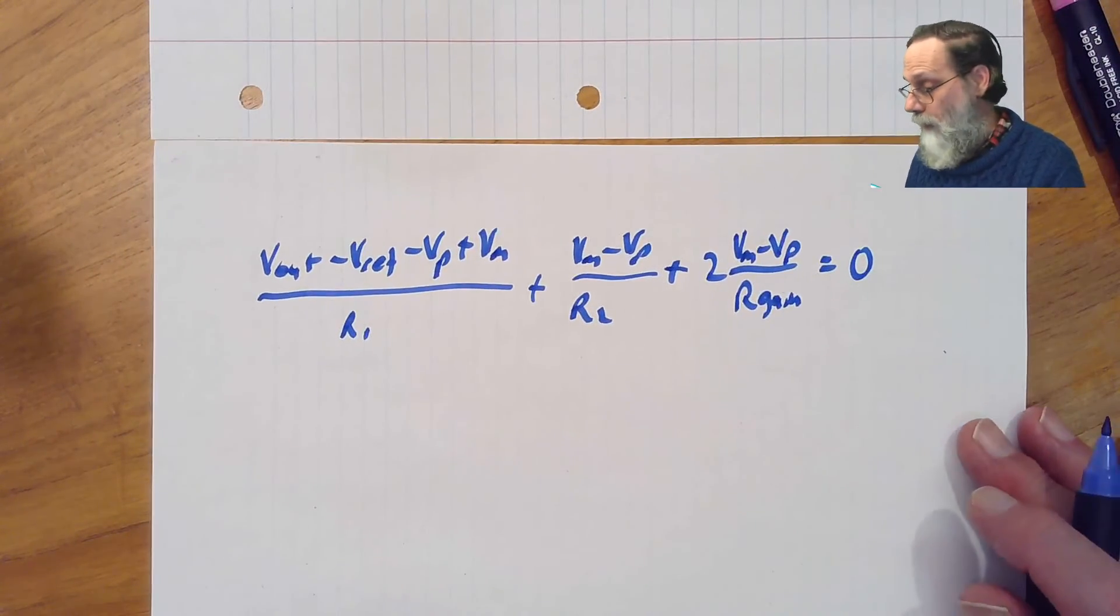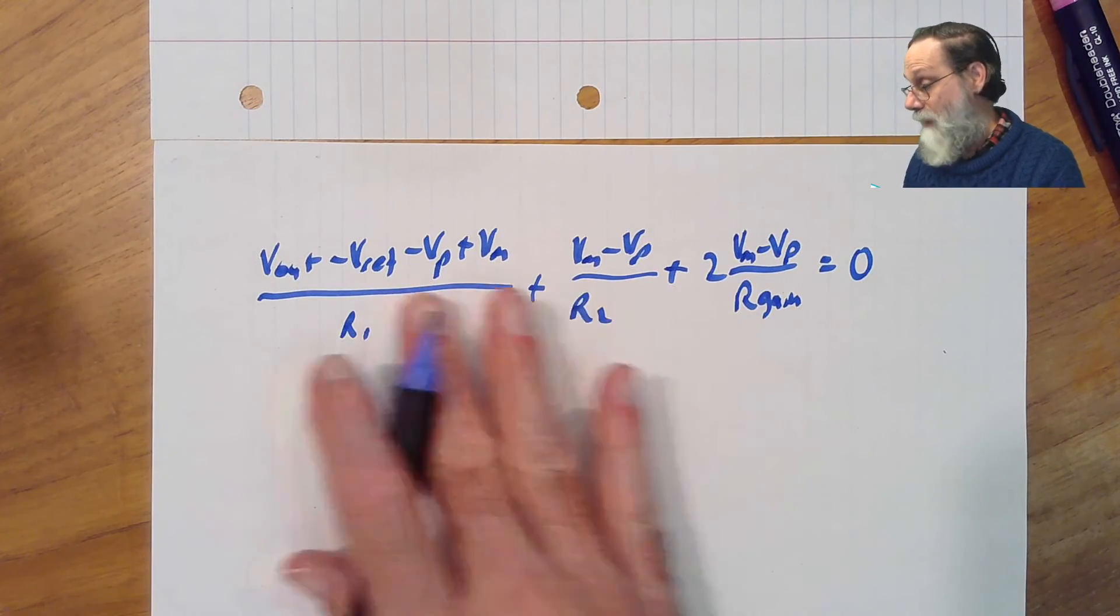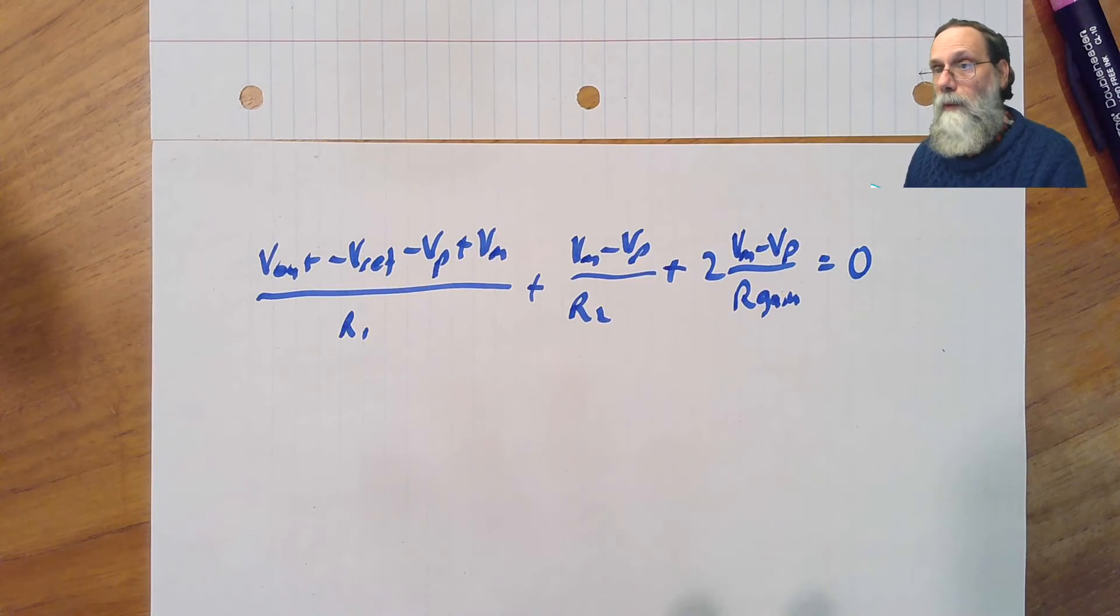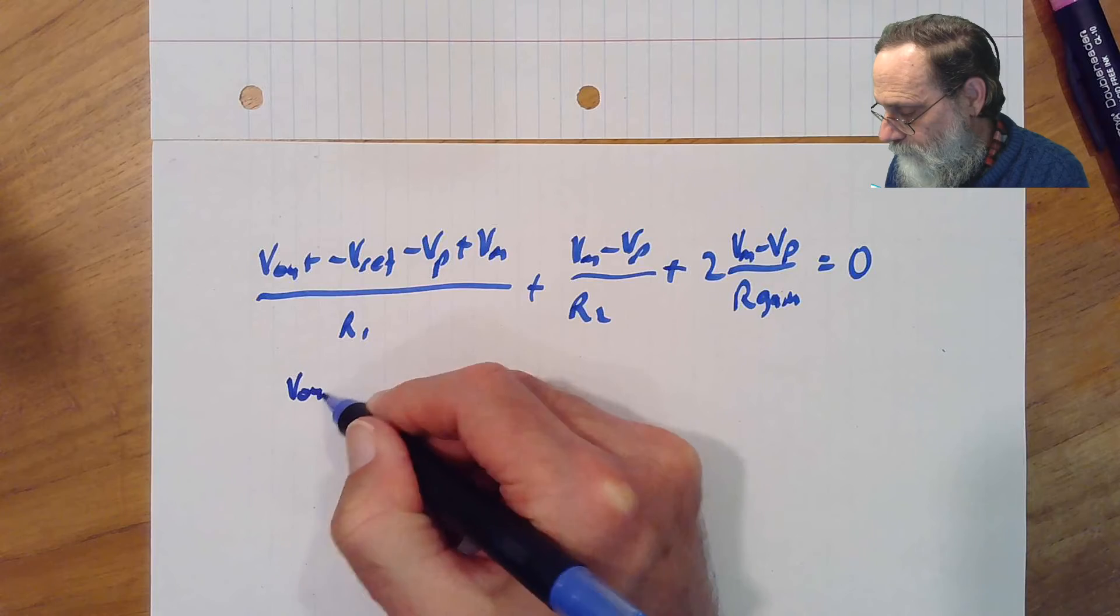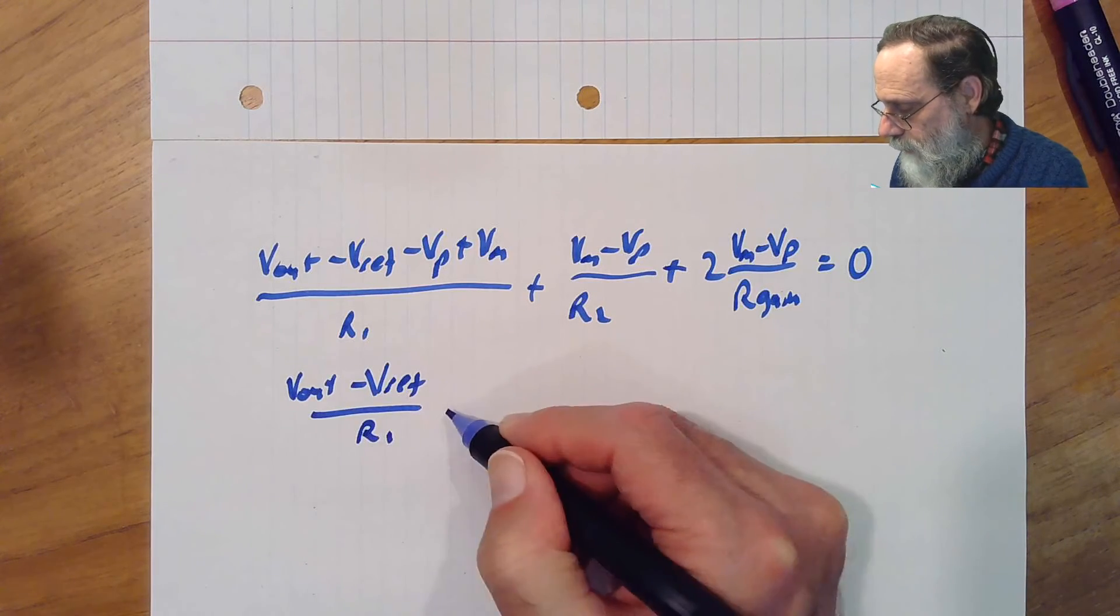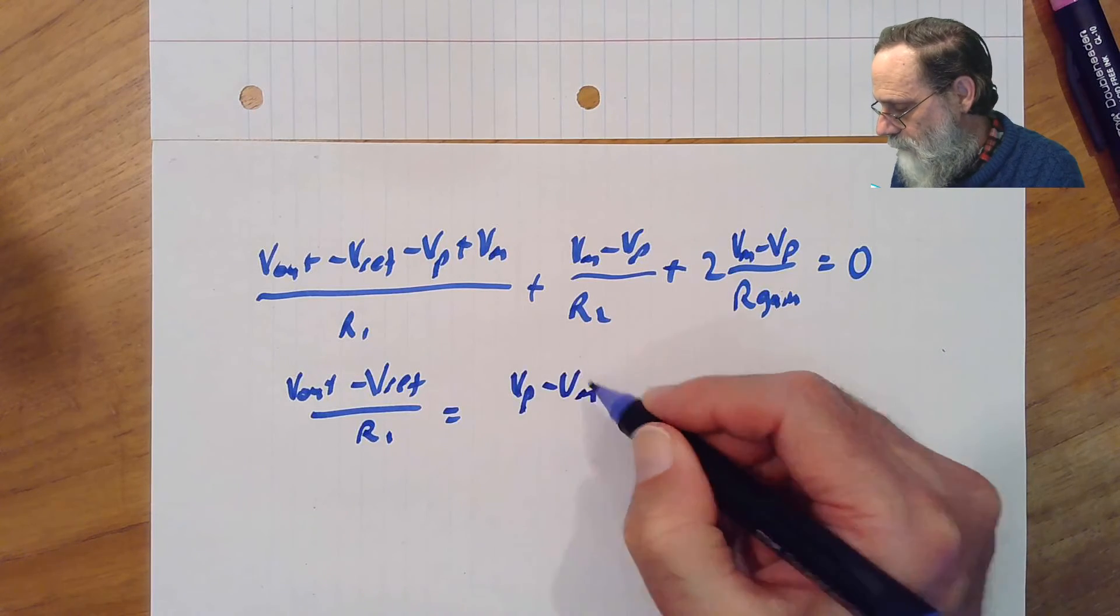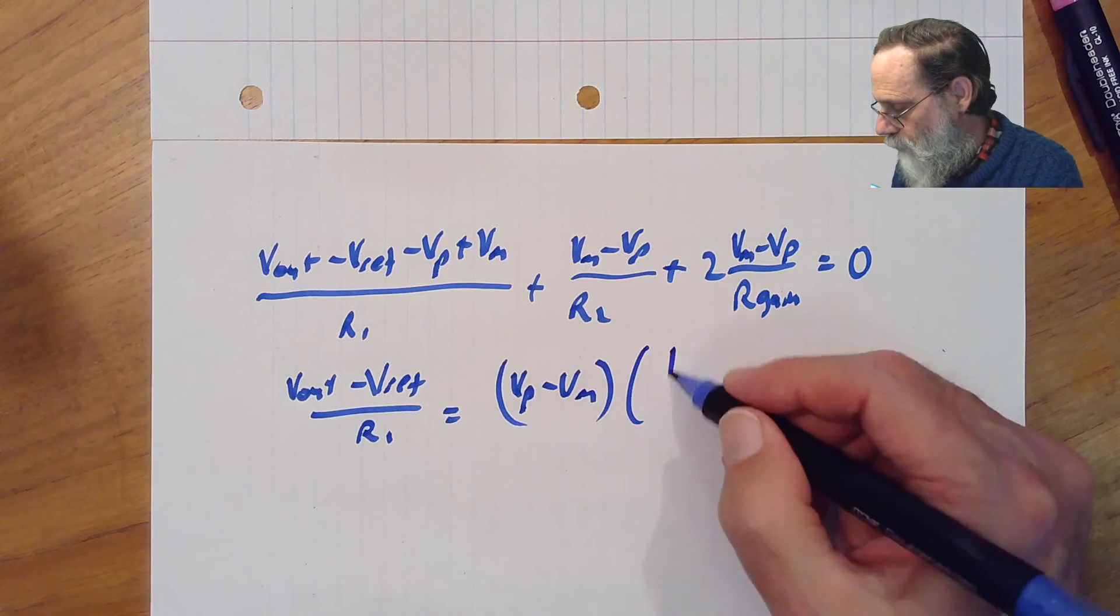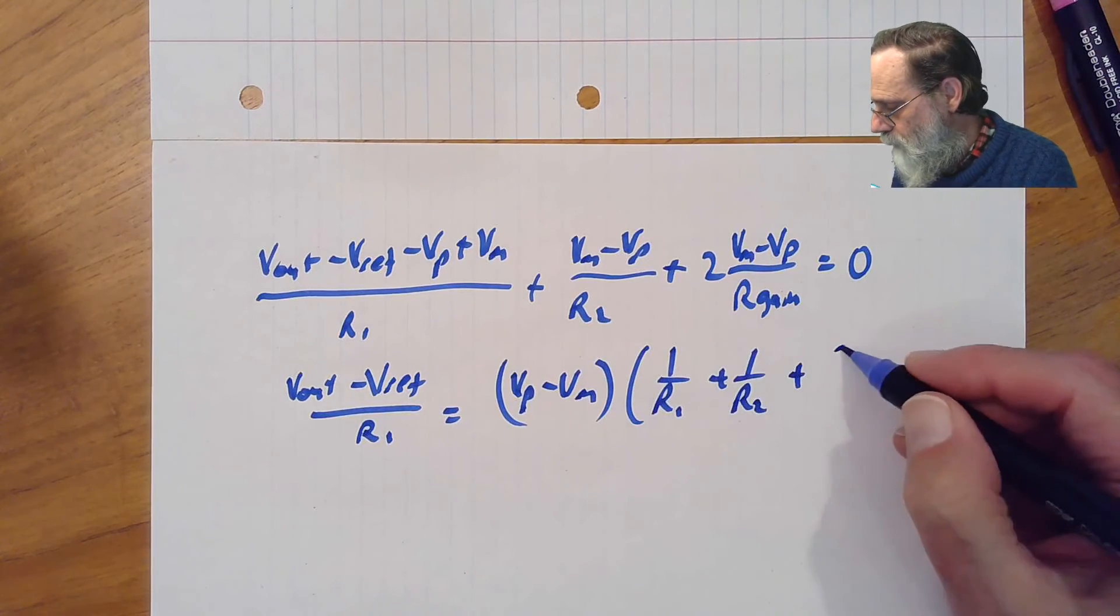so what have we got? We've got vout minus vref, and then we have a bunch of vm minus vp's. Why don't we just move all those over to the other side, and we'll have vout minus vref over r1 equals vp minus vm times 1 over r1 plus 1 over r2 plus 2 over r gain.